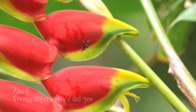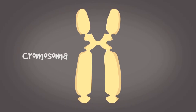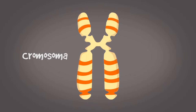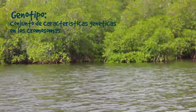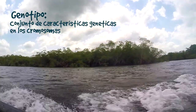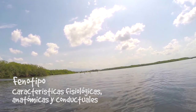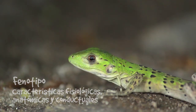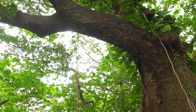Cada forma alternativa del gen se llama alelo. Estas modificaciones pueden ser el color de cabello, ojos, color de piel, estatura, etc. Cada alelo se ubica en una región específica del cromosoma llamada locus del gen. El genotipo se refiere a los alelos que posee un individuo, es decir, el conjunto de características genéticas alojadas en los cromosomas. El fenotipo se refiere a la manifestación de características, sean fisiológicas, anatómicas, metabólicas o conductuales. Un fenotipo está dado por un genotipo que se desarrolla en ciertas condiciones específicas.